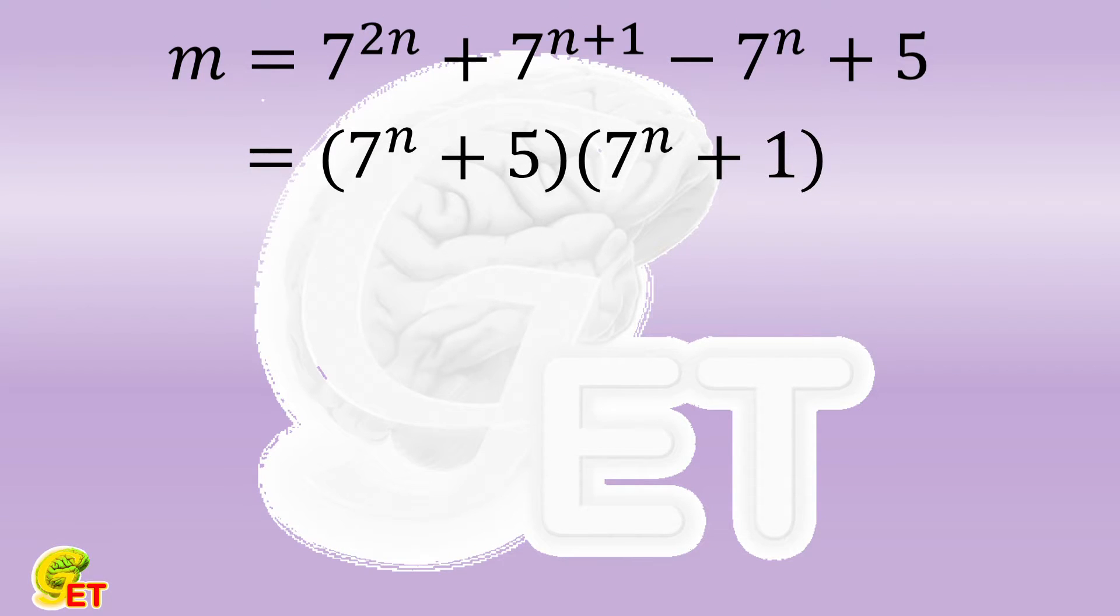Once this factorization is done, we will have several ways to complete the proof in the following. For instance, we can write 7 as 6 plus 1, then apply the binomial theorem.